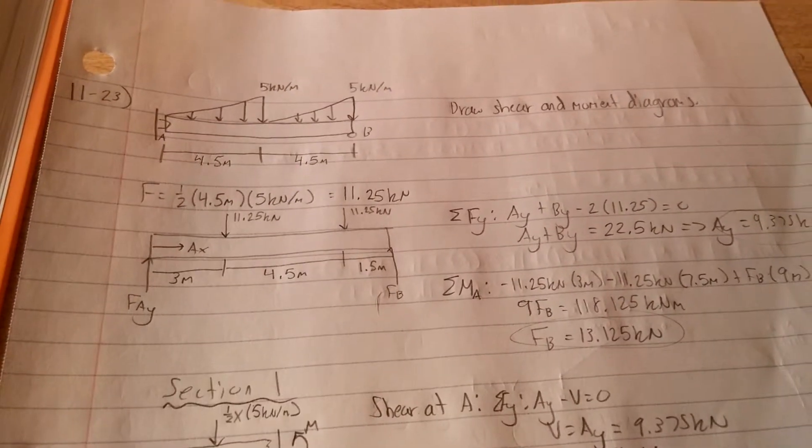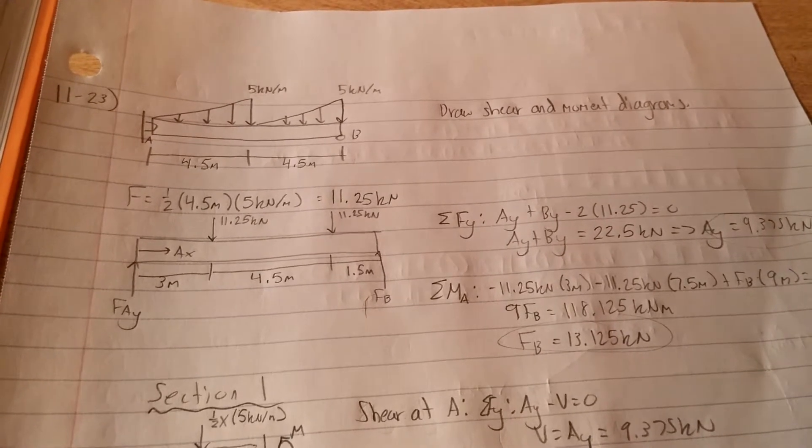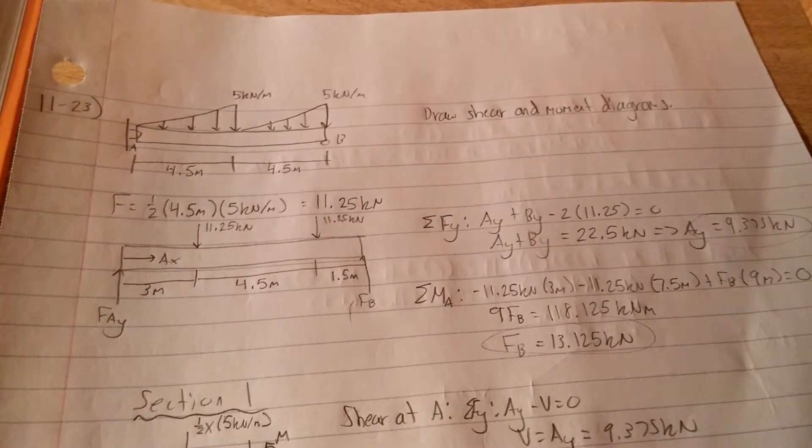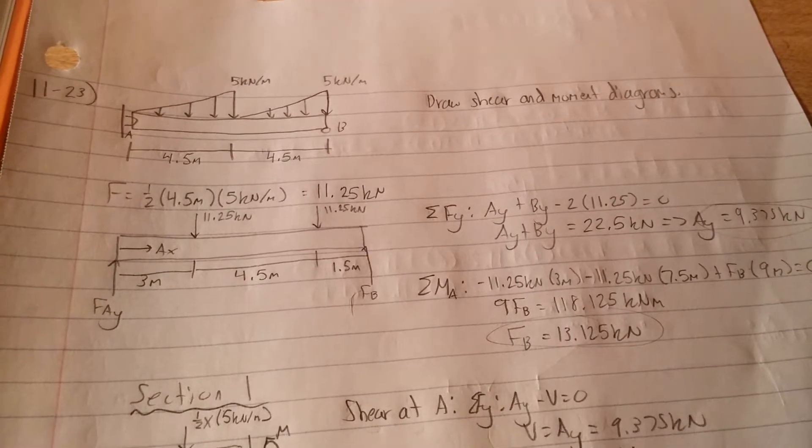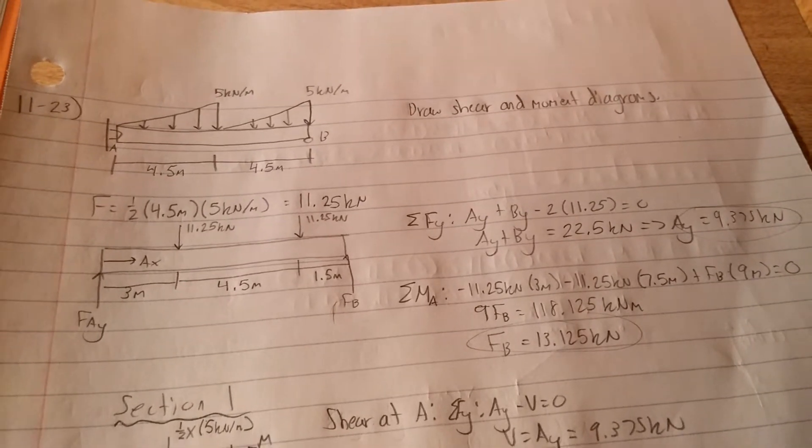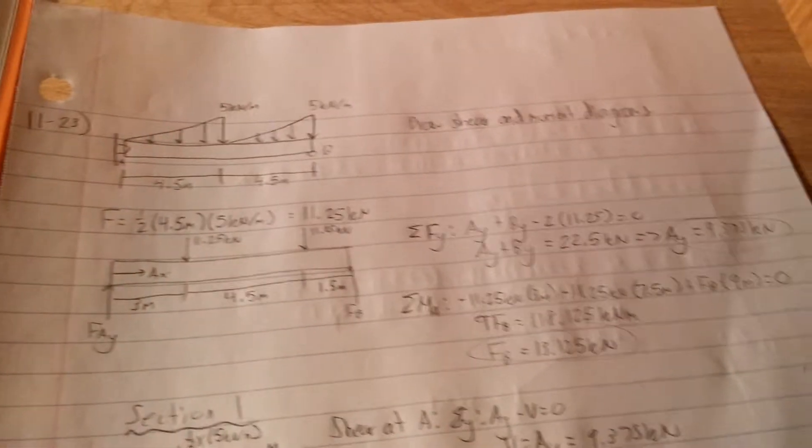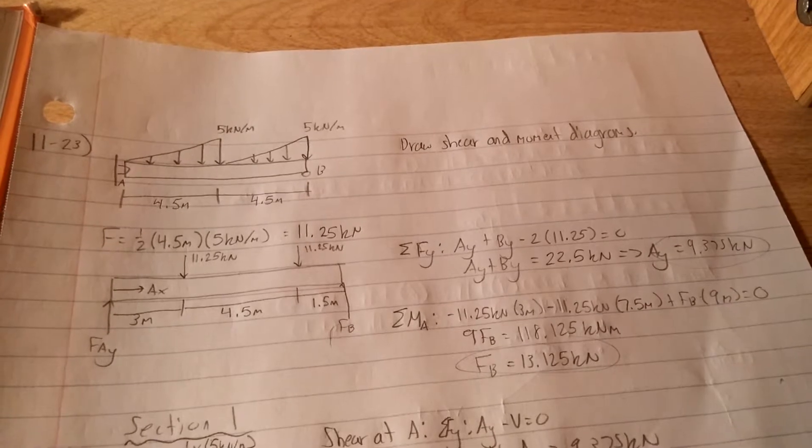For our Y equation, we have AY plus BY minus 2 times 11.25. And then you end up getting that the sum of A and B is 22.5.